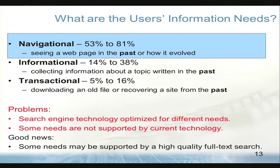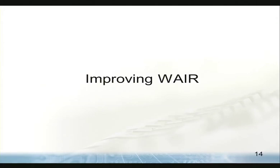There are also some needs not supported by current technology. For instance, users want to compare versions of pages and see what changed over time — they want to see how a page evolved. These are functionalities that need to be created in the future. The good news is that many of these information needs may be supported by a high-quality full-text search service, and users prefer this type of system. So I focused my research on trying to improve these systems.